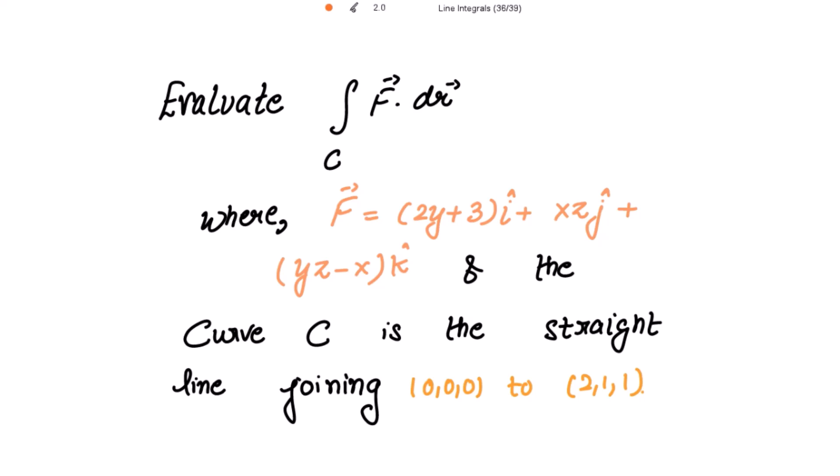Evaluate the line integral of the vector point function f and its dot product with dr vector, where f vector is given and the curve c is a straight line joining the two points from (0,0,0) to (2,1,1).